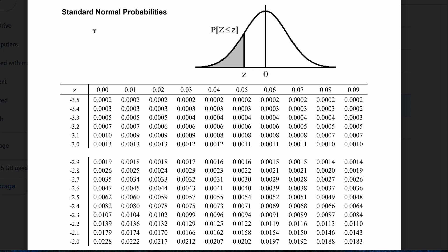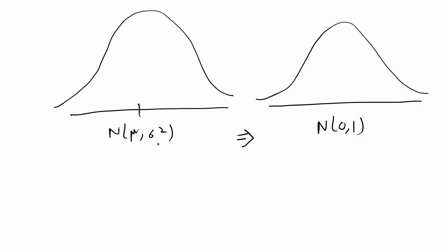You might be given a problem where you're given information about a normal distribution, and then to calculate probabilities or z-scores you're going to need to convert it first into a standard normal distribution. I'm going to go over the formula to do that in this video as well as an example problem. The formula relies on the concept of a z-score.